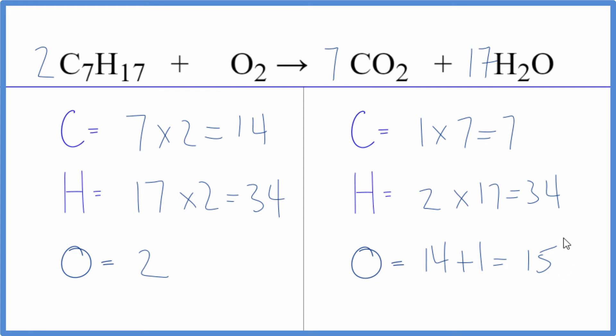But I have to update the oxygens. So I have seven times two, that's 14. Plus I have the 17 times the one, that's 17. That'll give me 31 oxygen atoms.